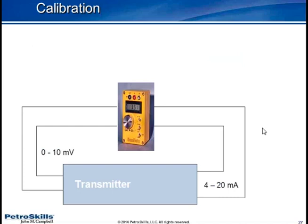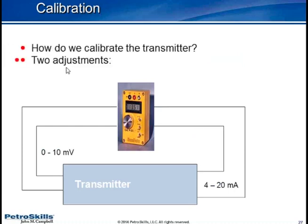How do we calibrate? We make use of a calibrator connected so I can simulate 0 to 10 millivolts and measure the 4 to 20 milliamps. I produce 0 in and adjust the zero to ensure I'm getting 4 milliamps out. Then set that up to 10 millivolts and adjust the span to give me 20 milliamps output.